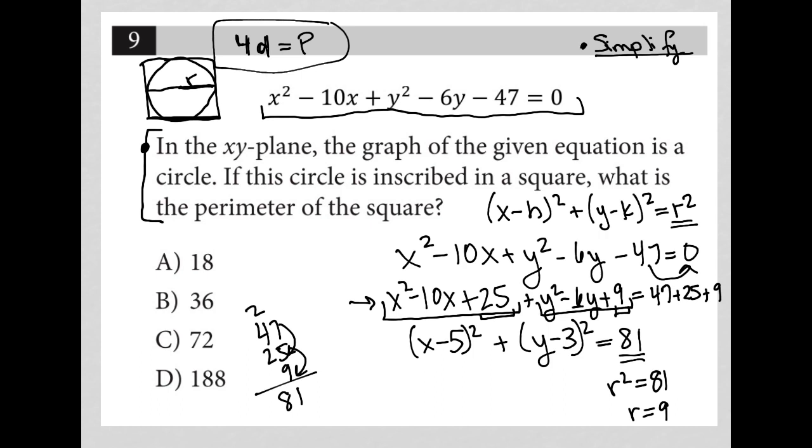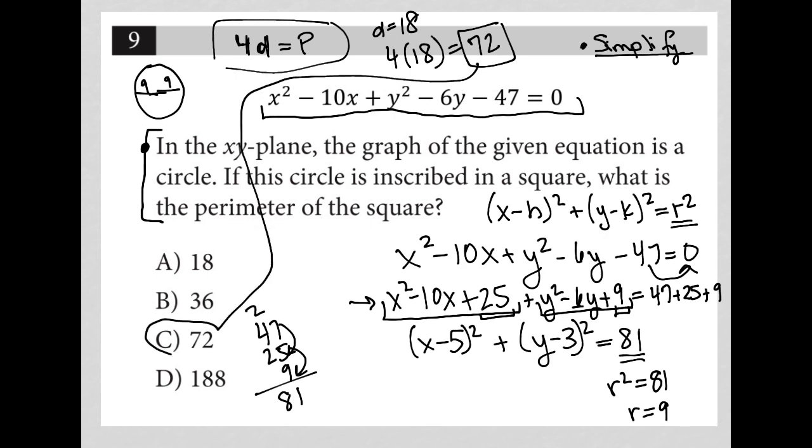So I go back up to my circle here. Now I know, if this is 9, that means my diameter is 18—I have two 9s, basically two radii. So my diameter is 18, so d is 18. That means 4 times 18 is my perimeter. 4 times 18, if I do the math there: 4 times 10 is 40, 4 times 8 is 32, 40 plus 32 is 72. So my perimeter must be 72, and that's why my answer here is choice C.